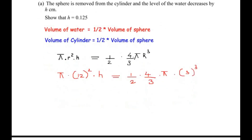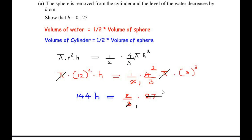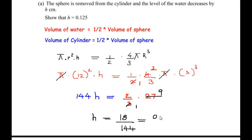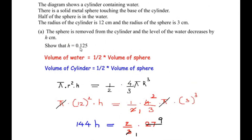Simplifying further, π cancels from both sides, giving us 144h = (2/3) × 27. Then 3 and 27 divide, leaving 2 × 9 = 18, so h = 18/144, which equals 1/8 or 0.125 in decimal form. So we have shown that the level of water decreases by h = 0.125 cm.